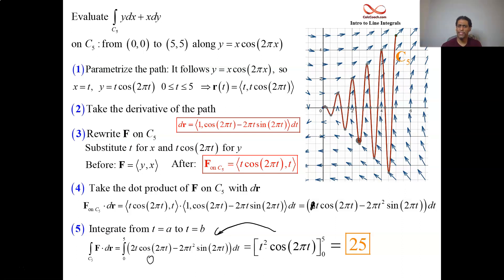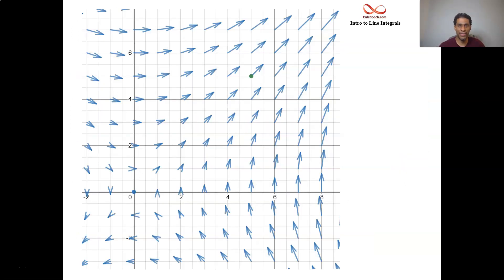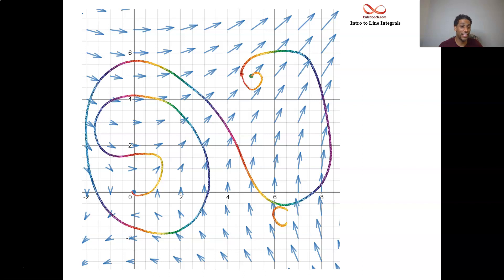So wait, 5 different paths, same outcome from each path. There's the vector field. Starting point in blue, ending point in green. What about some wacky path? Turns out we'll still get 25, regardless of the path.